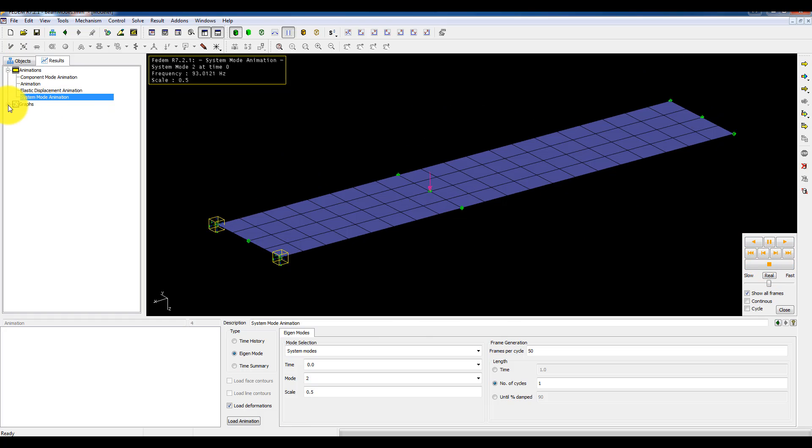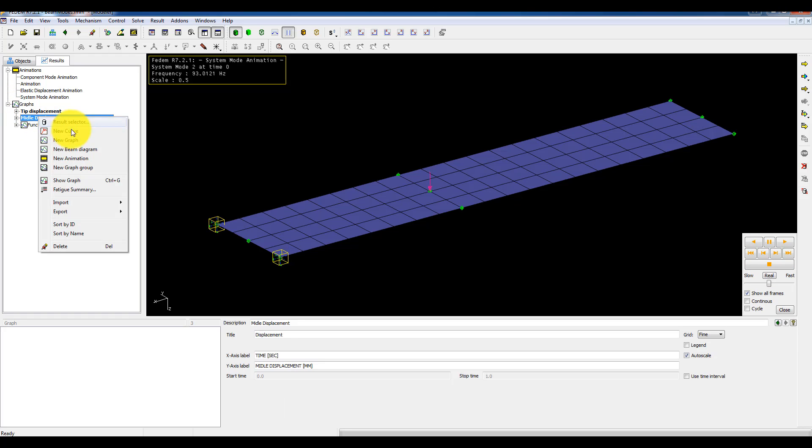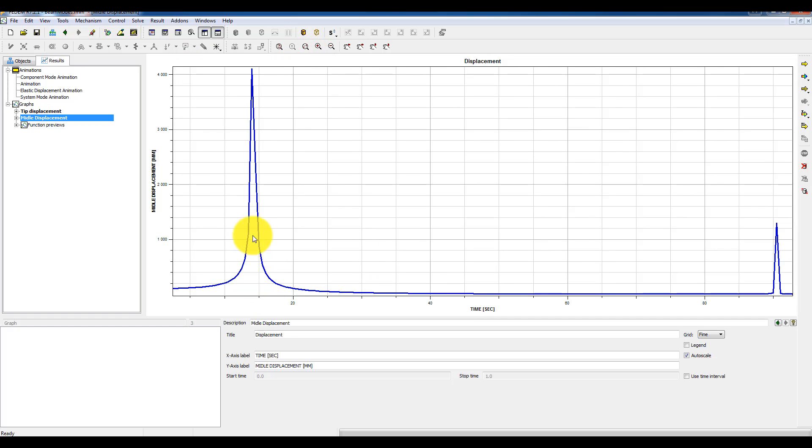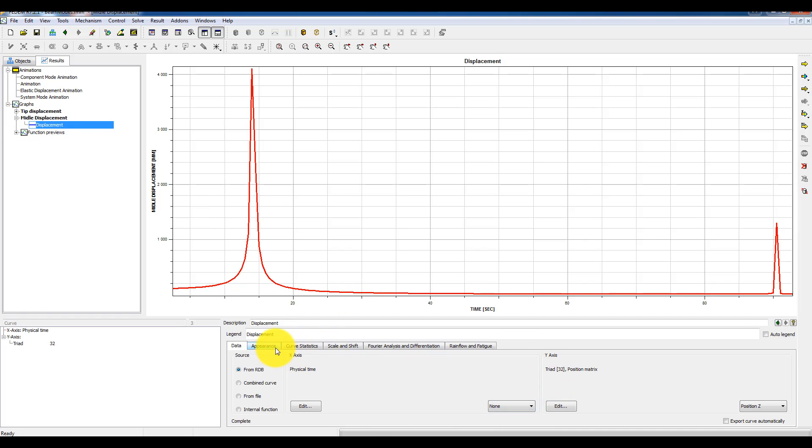Let's check the results for this one. We can check the displacement. And here you see the fast Fourier analysis of the oscillation. It shows me that I have a resonance frequency of roughly 14 Hz and 93 Hz. I can switch off this fast Fourier transform.